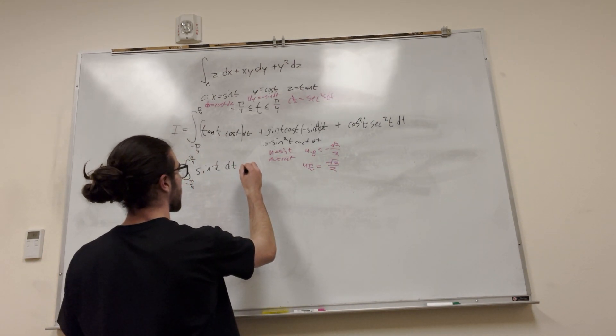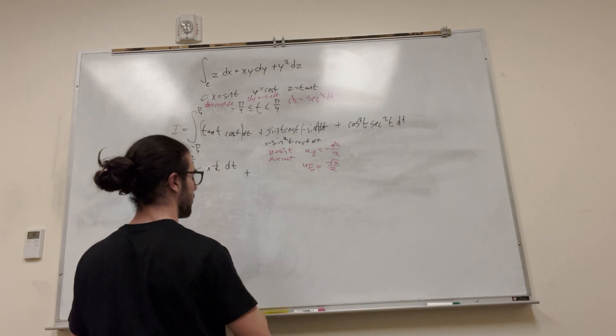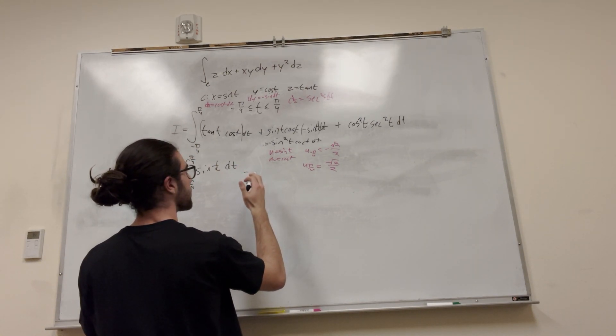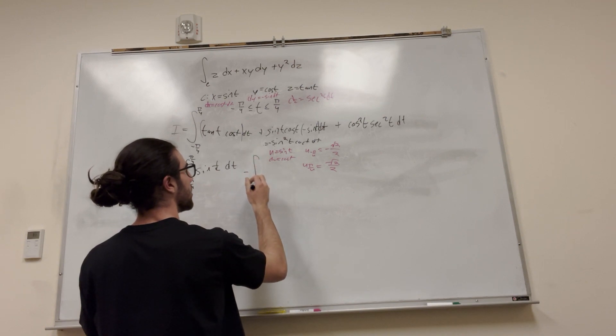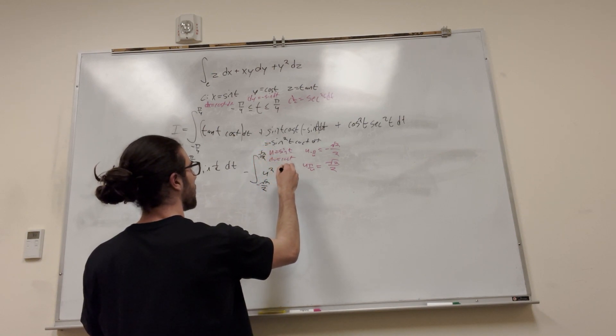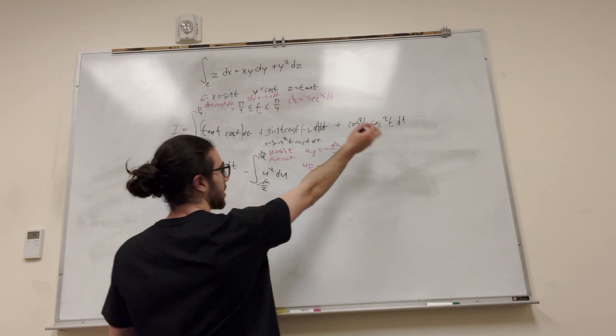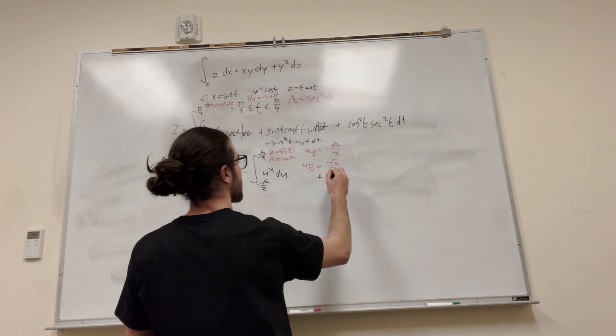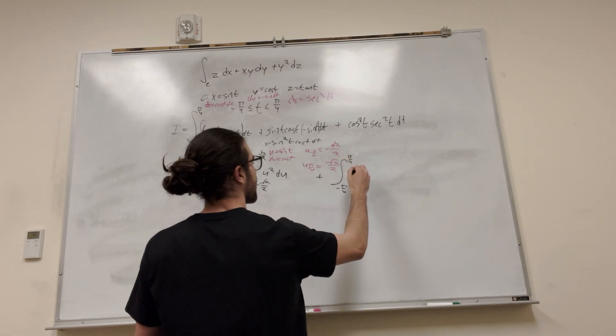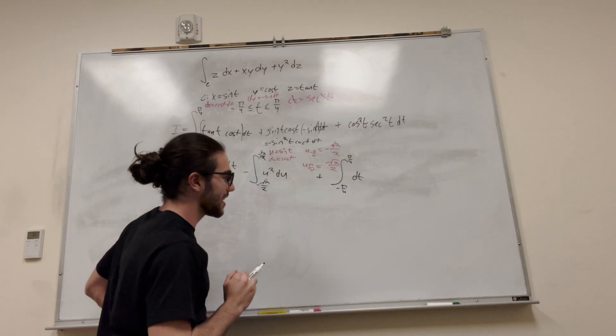U integral is going to look like this. Don't forget our negative. So let's bring the negative up front so I don't forget it. minus the integral from negative radical 2 over 2 to radical 2 over 2 of u squared du, right? All right, now this integral is just going to become 1. So that's going to be plus the integral from negative pi over 4 to pi over 4 of dt. Okay, now we can solve this.